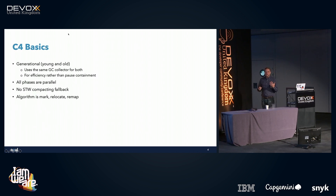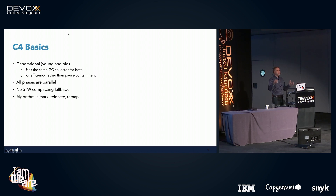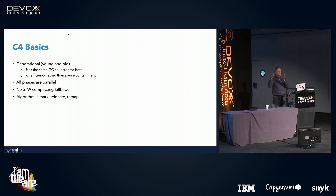So what is C4? C4 is the Continuous Concurrent Compacting Collector. It uses different techniques from traditional GC algorithms. Some of what it does is familiar: we divide the heap into young and old generations because almost all objects allocated in a Java application are only used for a very short time. By garbage collecting most objects in the young generation, we reduce the load on the old generation and achieve overall better memory management efficiency.